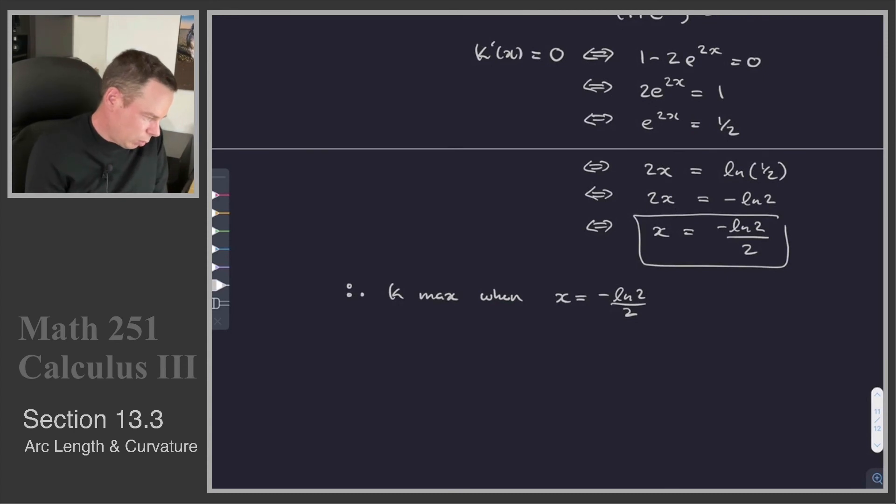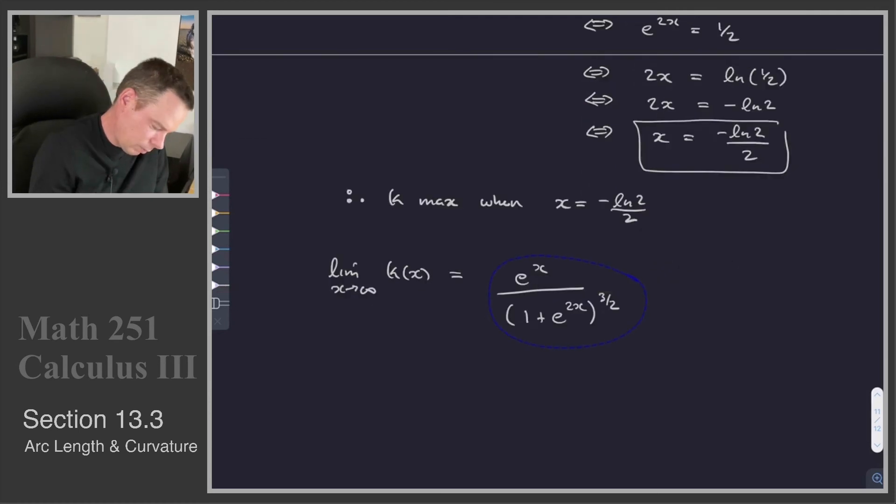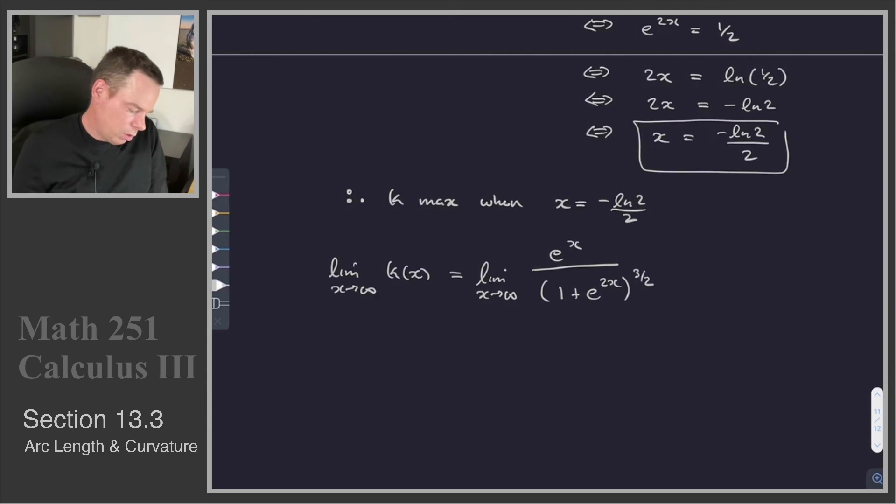Alright, the last part of the question says, what happens to the curvature as x goes to infinity? Well, that means we're interested in the limit as x goes to infinity of the curvature. So that's the thing we're interested in computing the limit of as x goes to infinity. As x goes to infinity, the top goes to infinity, the bottom goes to infinity. So this is going to be a L'Hopital rule type situation, but we'll do a bit of intuition work here. This top is like e to the x. The bottom, well, when x is really, really big, that 1 plus the 1 doesn't really make any difference.